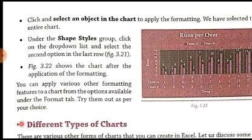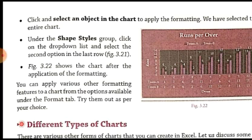Before applying the shape style, you have to first select that portion of the chart — that object — in which you want to apply the formatting. If you select the whole chart, whatever formatting option you choose from the Shape Styles group will be applied to the whole chart. If you select any particular object in the chart, the formatting will be applied to only that particular selected object.